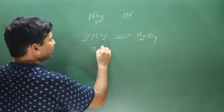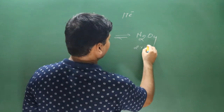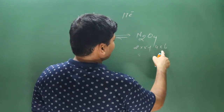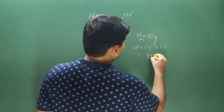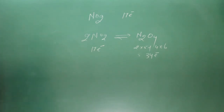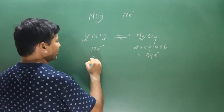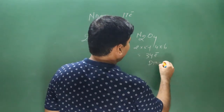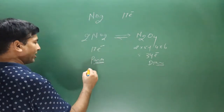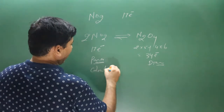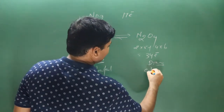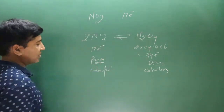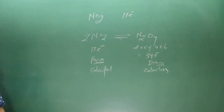NO2 has 17 electrons. N2O4 has 2×5 + 4×6 = 34 electrons — an even number. NO2 is paramagnetic (odd electrons, colored). N2O4 is diamagnetic (even paired electrons, colorless and more stable).